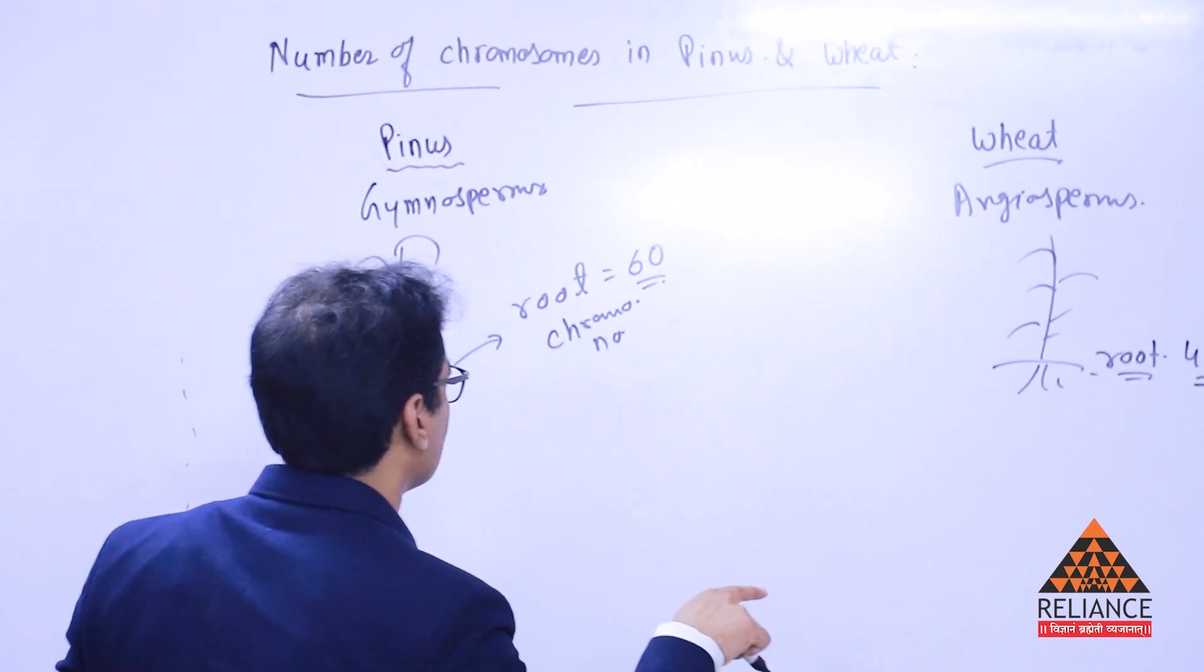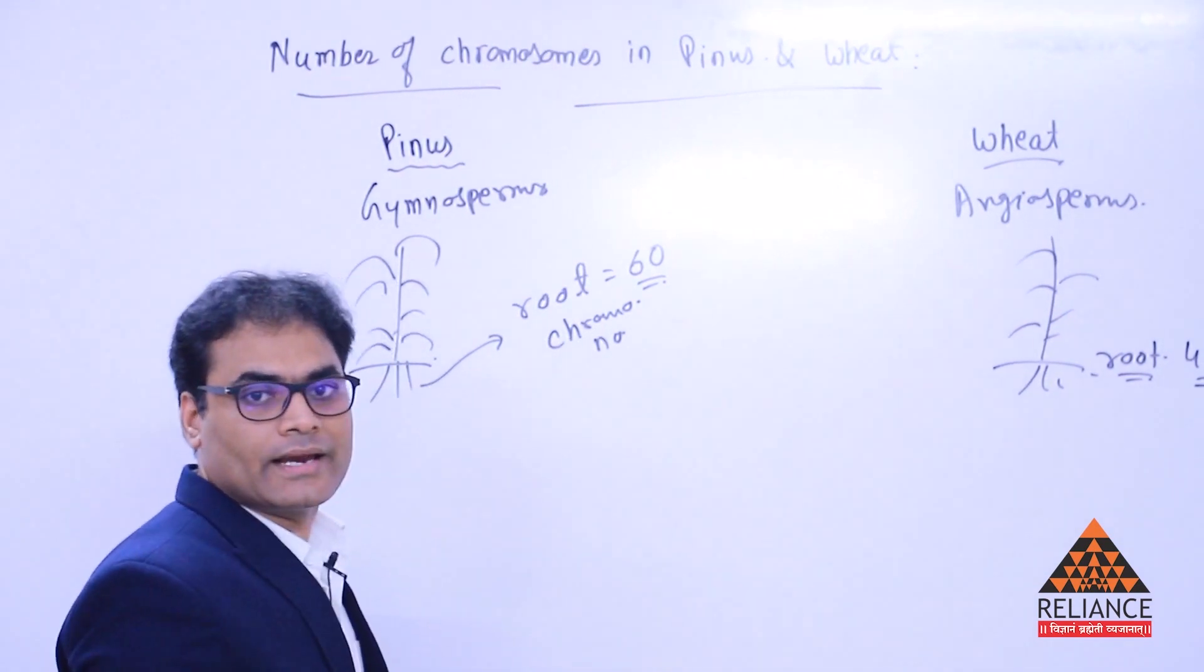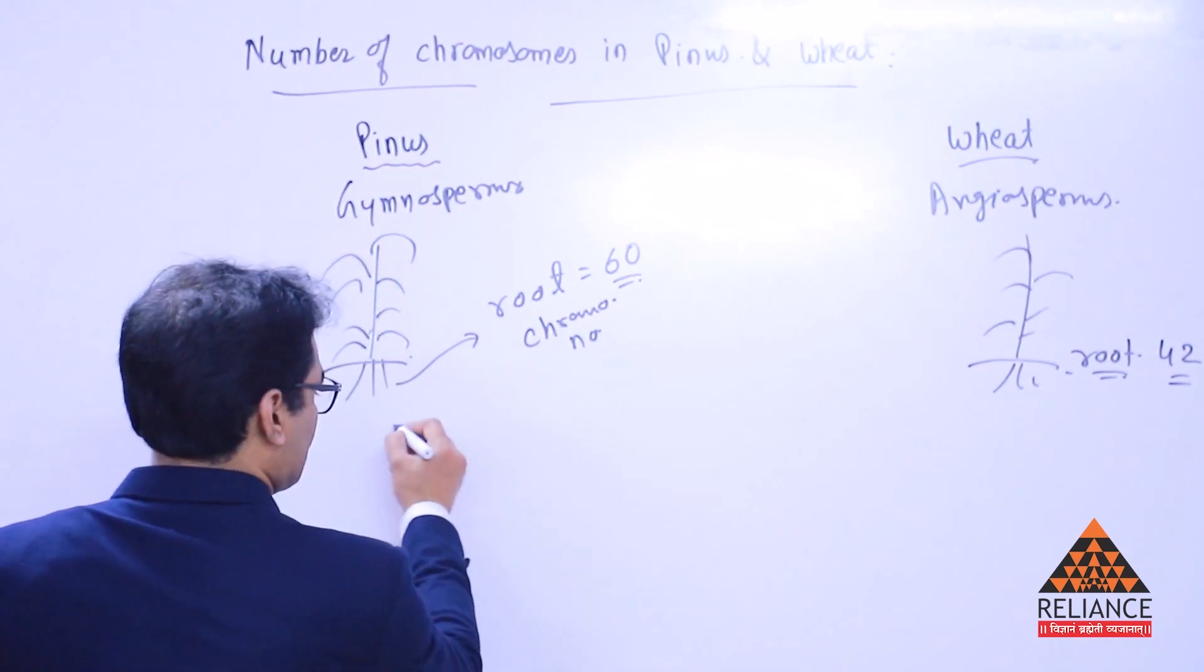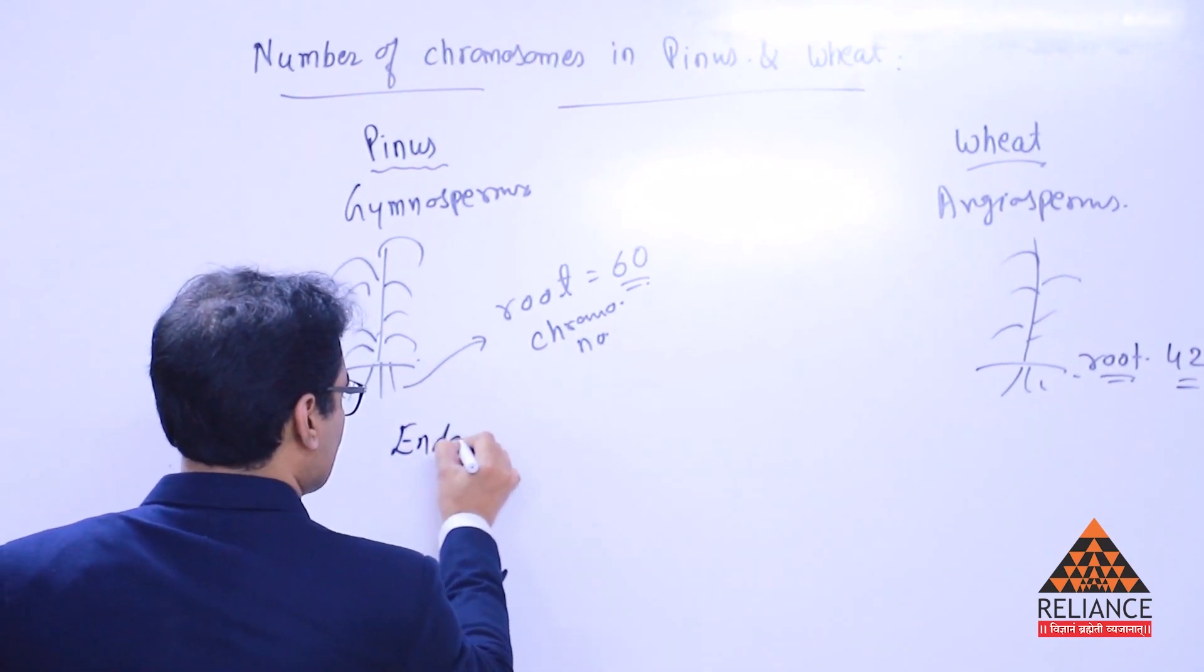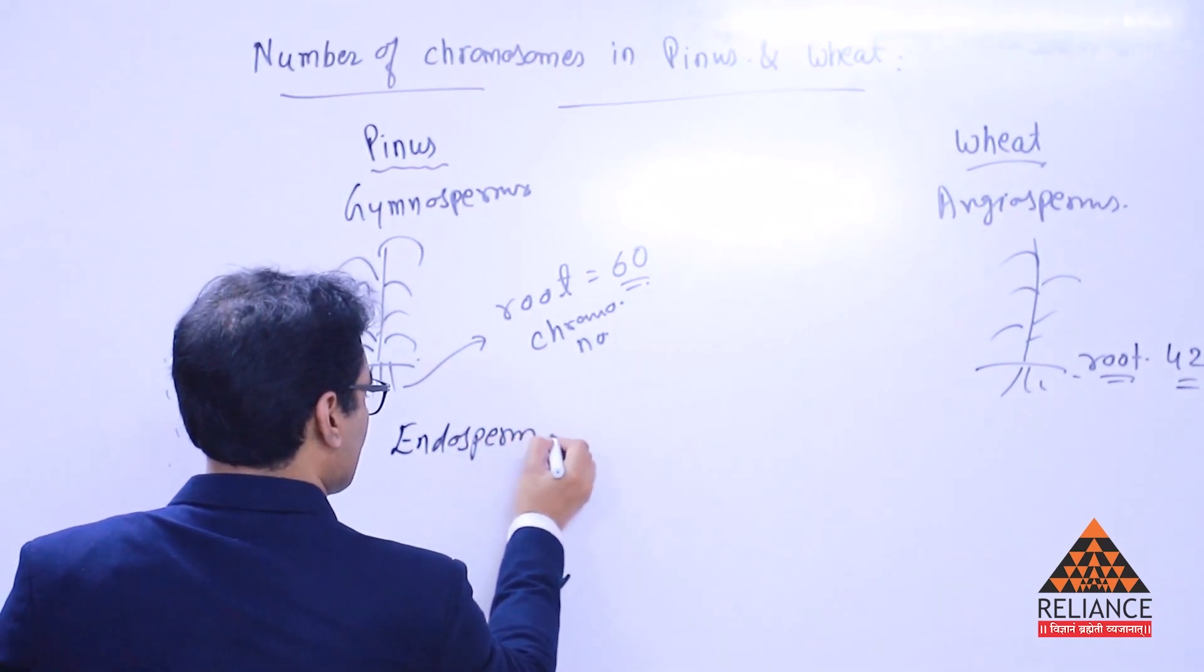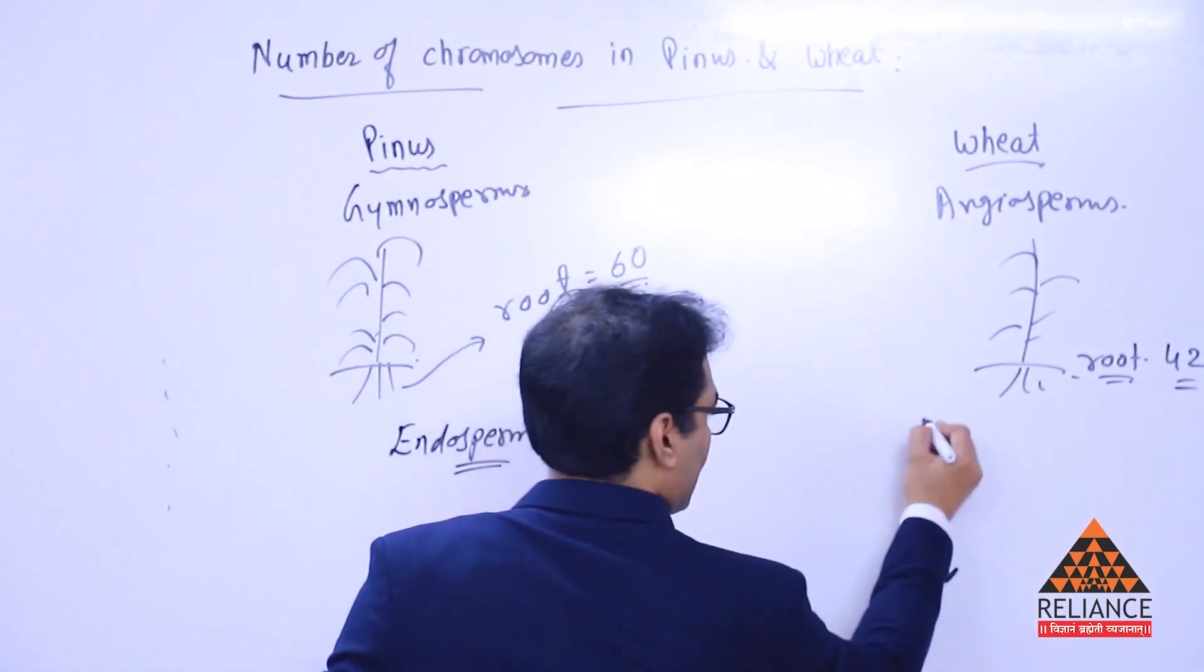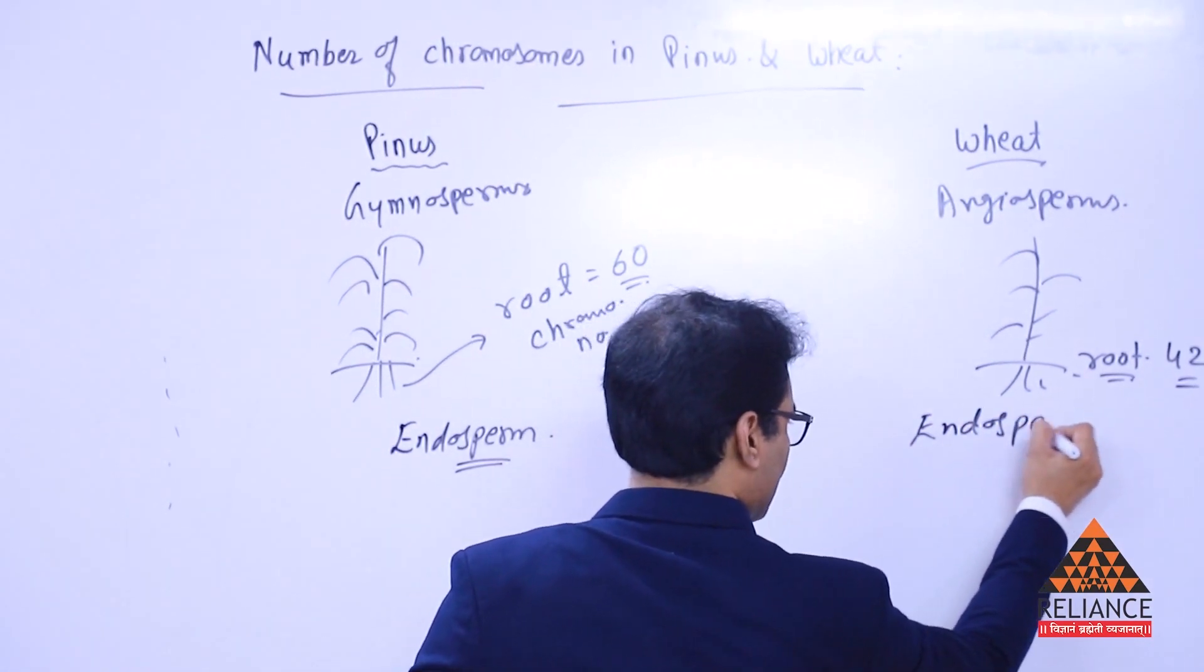Now, what we're going to do is find out the number of chromosomes in their endosperm. Try to understand first of all, this term, the endosperm. Obviously, it's a stored food material of the plant. Endosperm of both of these plants.